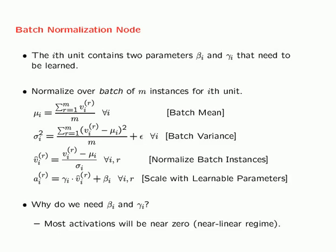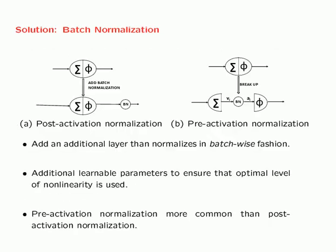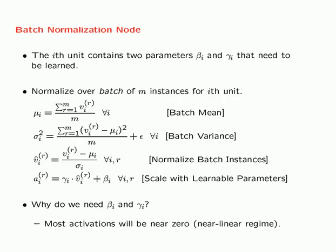You then normalize: (Vᵢ^r − μᵢ) / σᵢ, giving you V̂ᵢ^r, the normalized batch instance. For input features, this is where you stop. But in batch normalization, you have additional learnable parameters βᵢ and γᵢ, so the final output Aᵢ^r is given by γᵢ V̂ᵢ^r + βᵢ.